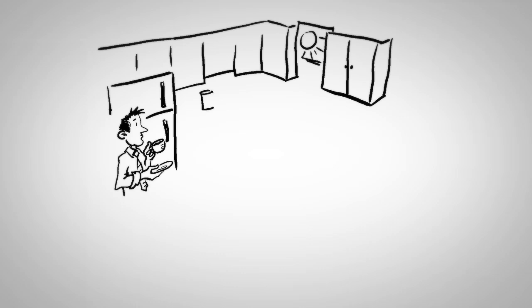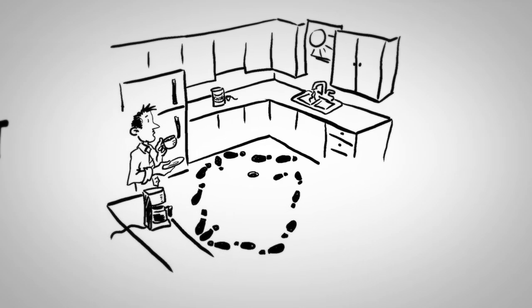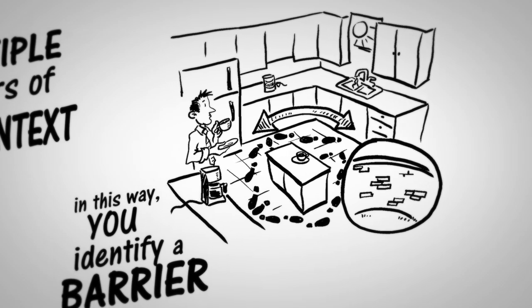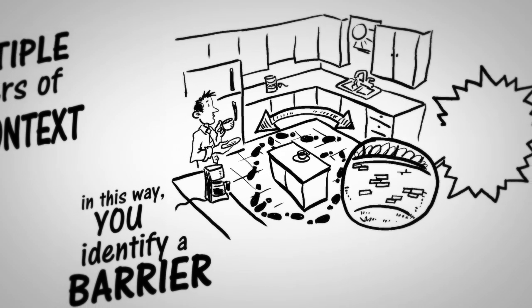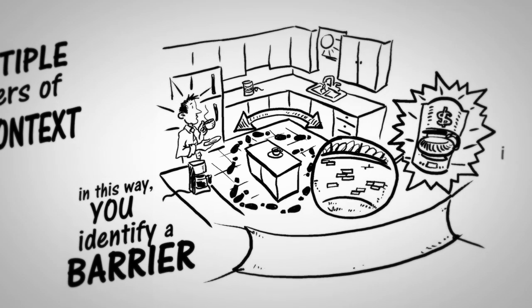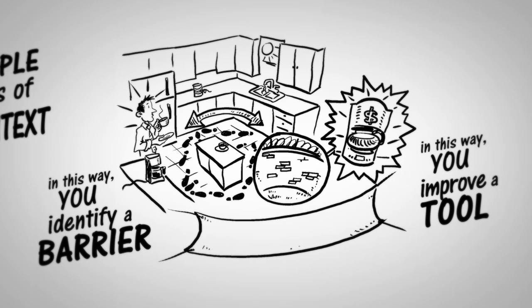If you notice that you have to walk back and forth in the kitchen a lot to get the items you need, you may decide to arrange those items closer to where you are working. In this way, you have identified a barrier. If you notice that your coffee maker takes too long to warm up, you invest in a better one. In this way, you improve a tool. As the names imply, tools help the process go forward; barriers hold the process back.